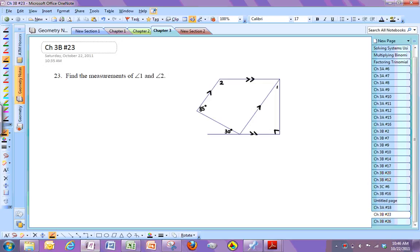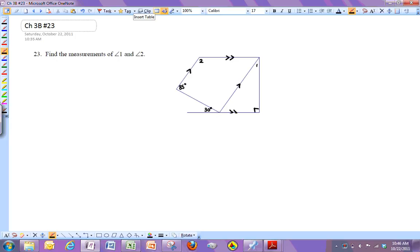Okay, in this problem, chapter 3B, number 23, we're given this diagram here with some parallel lines in them, and we've got to figure out what angle 1 and 2 measure.